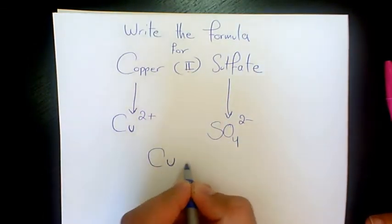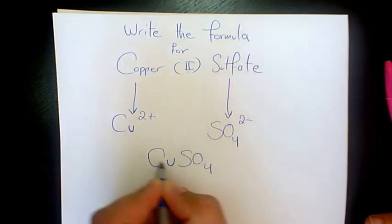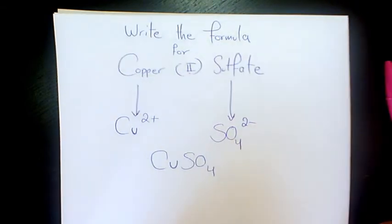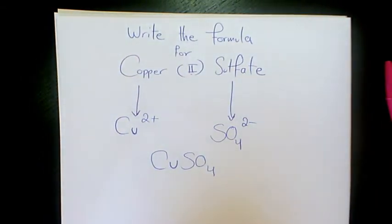This means we just write it like this: the 2 from Cu and the 2 from SO4 cancel out, so we don't write any subscripts. That's why the formula is CuSO4—the formula for copper(II) sulfate.